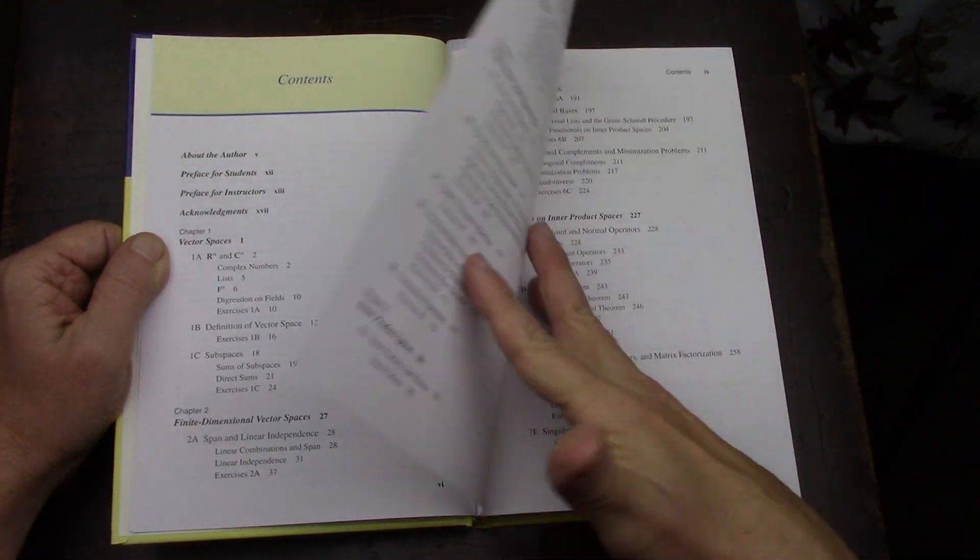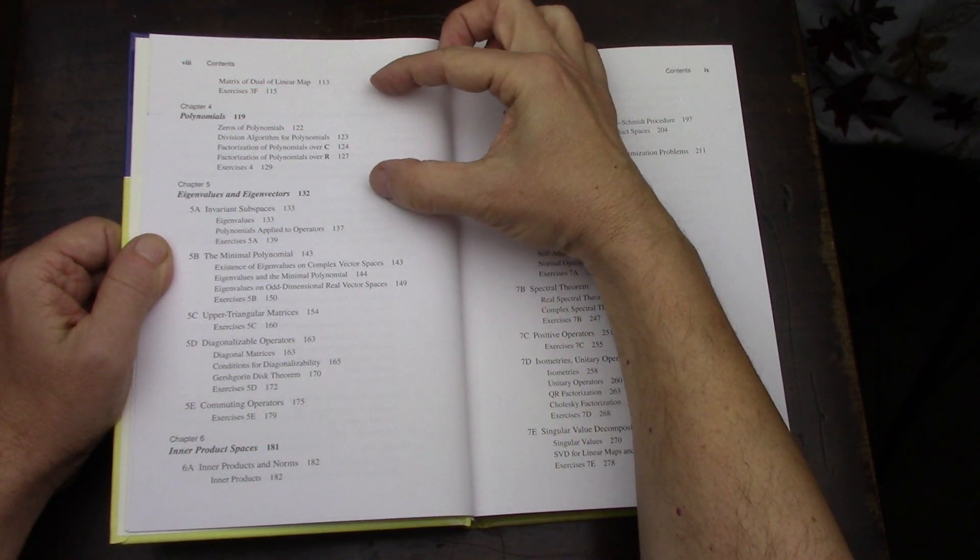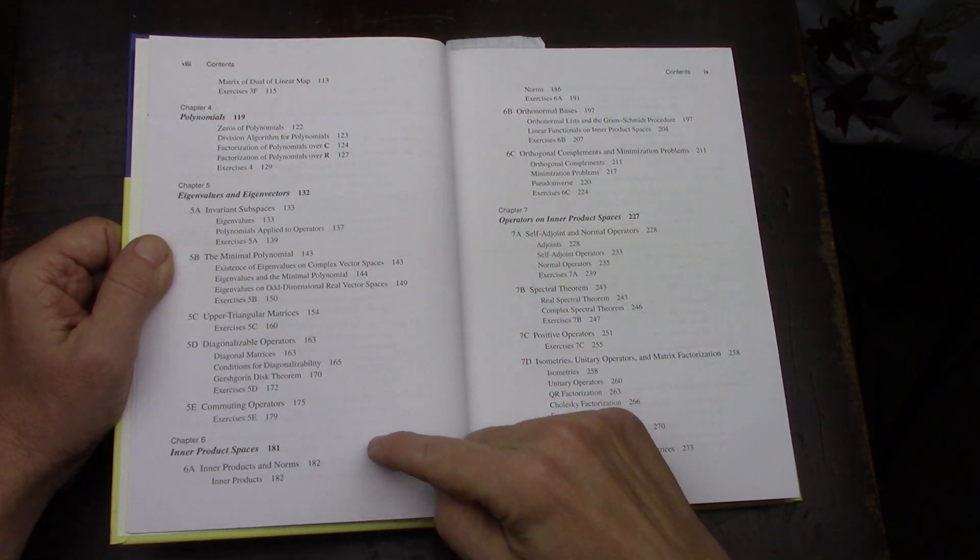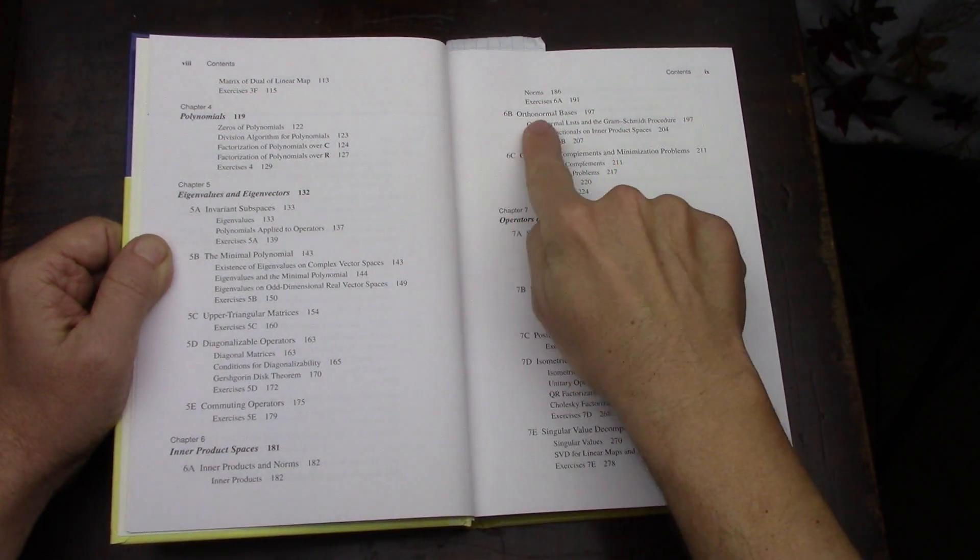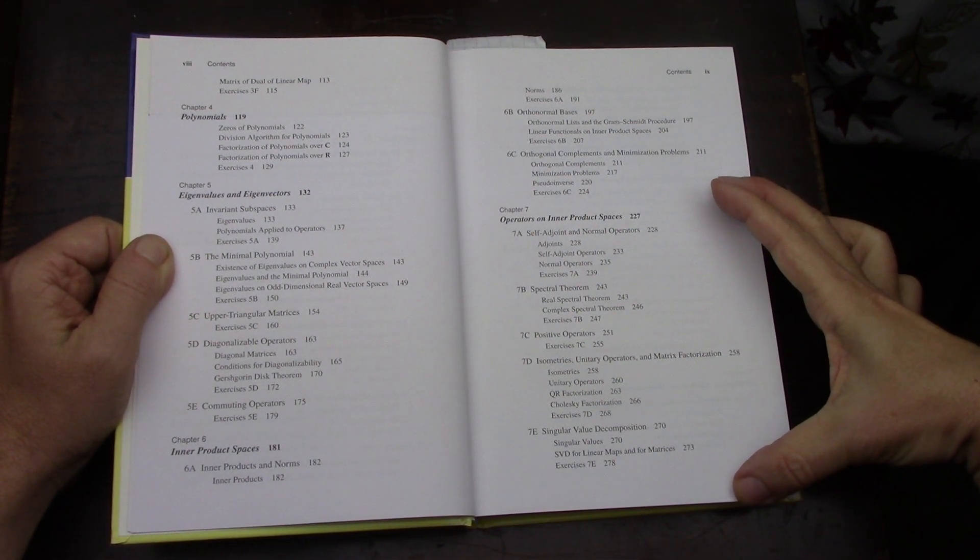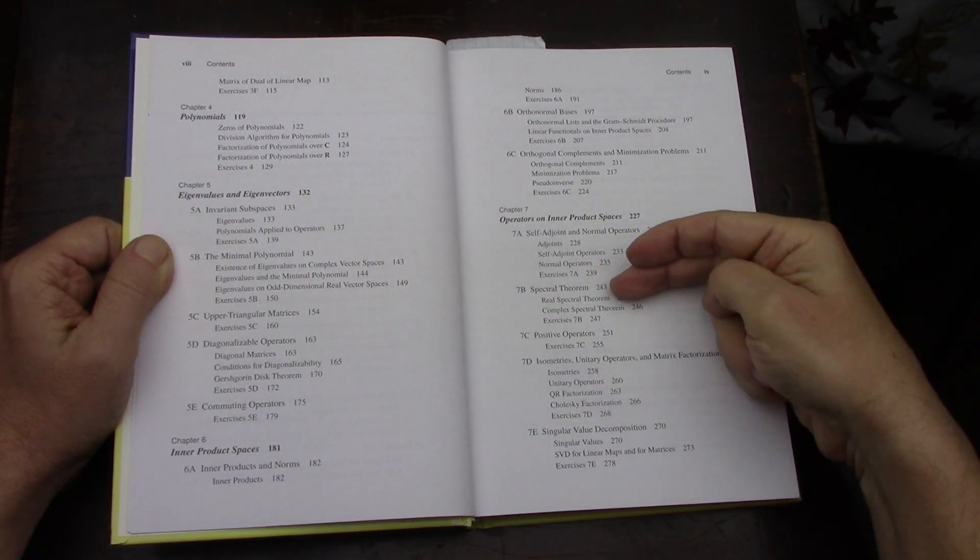Duality is very important to me because it's extra content compared to Friedberg and Insel. Then a whole chapter on polynomials, eigenvalues and eigenvectors, and inner product spaces where you get into orthonormal and orthogonal concepts.